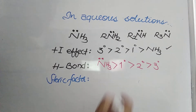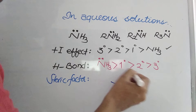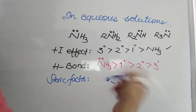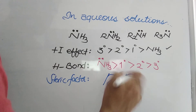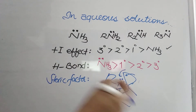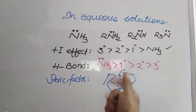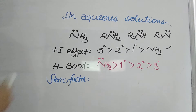The third factor is the steric factor. Nitrogen must donate the electron pair to an incoming group. If hydrogen atoms are attached — small groups — any incoming group can easily approach and accept the electron pair. But if bulky alkyl groups like ethyl, propyl, isobutyl, or tertiary butyl are present, they occupy more space, so the incoming group cannot easily accept the electron pair.